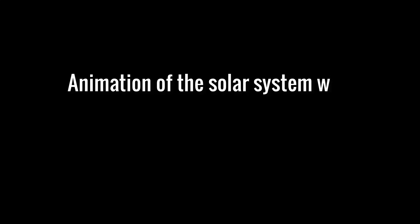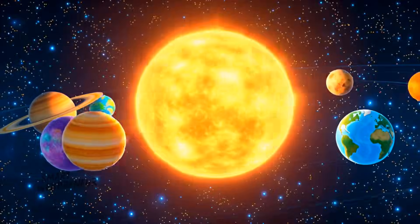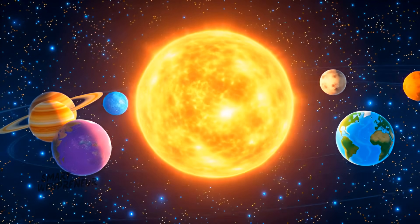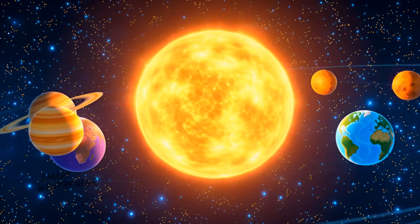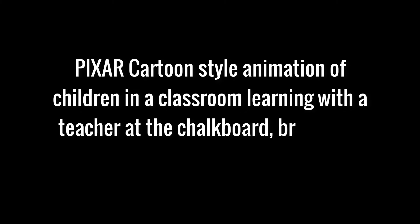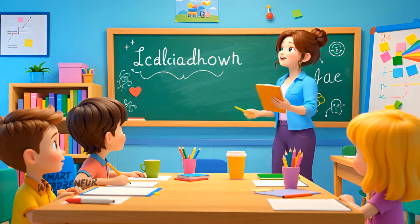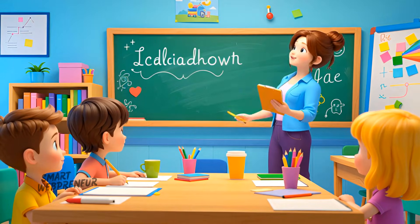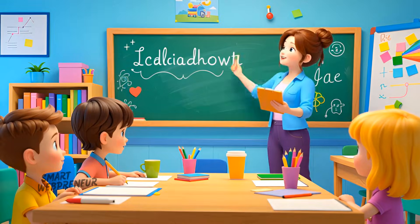Prompt: animation of the solar system with planets orbiting the sun in a style suitable for a science explainer. This one didn't turn out well at all. I couldn't get it right even after multiple attempts and different prompt variations. The AI seems to struggle with precise scientific accuracy and complex multi-object animations. Prompt: Pixar cartoon style animation of children in a classroom learning with a teacher at the chalkboard, bright and playful. The cartoon style is charming — it is not the best, but definitely usable and would work well for educational content aimed at younger audiences.